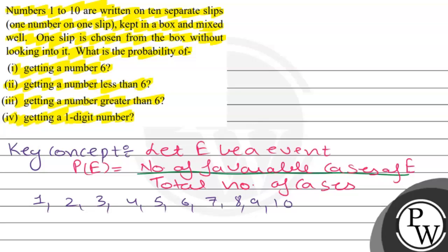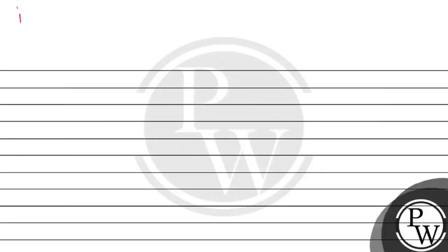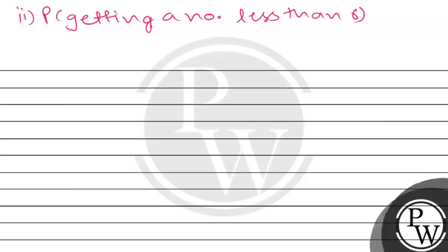We will take one slip from the box. So the probability of getting a 6 — number of favorable cases is 1 (only the slip with 6), and the total number of cases is 10. So the probability of getting a 6 is 1 divided by 10.